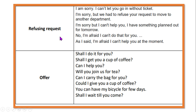Refusing a request: if you have words like 'I'm sorry' or 'I'm afraid', these repentance words indicate refusing a request politely. For example: 'I'm sorry, but I can't help you', 'I'm sorry, but we have to refuse your request', 'No, I'm afraid I can't do that for you' - all are refusing a request in a polite manner.